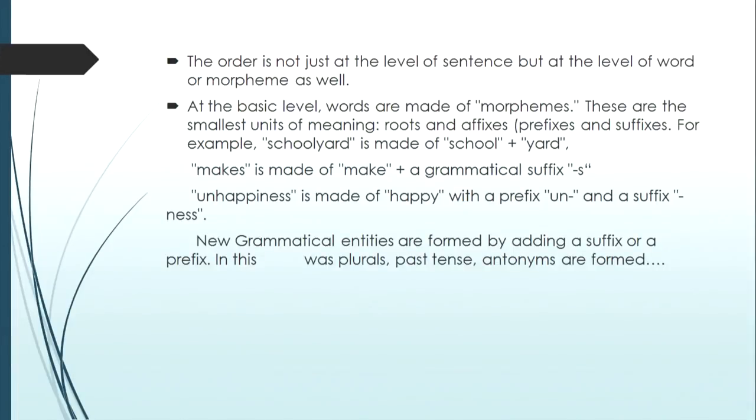The study of the word or the structure of a word is called morphology. At the basic level, a word is made up of morphemes — the smallest units of meaning — and roots and affixes. Affixes can be a prefix or a suffix. For example, the word 'make' with suffix 's' gives 'makes'. The word 'unhappiness': the root is 'happy', we add the prefix 'un' to get 'unhappy' — an antonym — and then add the suffix 'ness' to form 'unhappiness', giving a new grammatical entity.